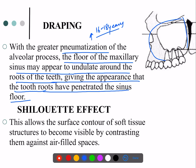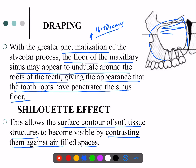Apart from this, you can see the surface contour of the soft tissue structures in the maxillary sinus by using a contrasting agent against the air-filled spaces, because air will be marked in a different way and fluid and soft tissues will be marked in a different way on the radiograph. This particular effect can also be asked as an exam question.